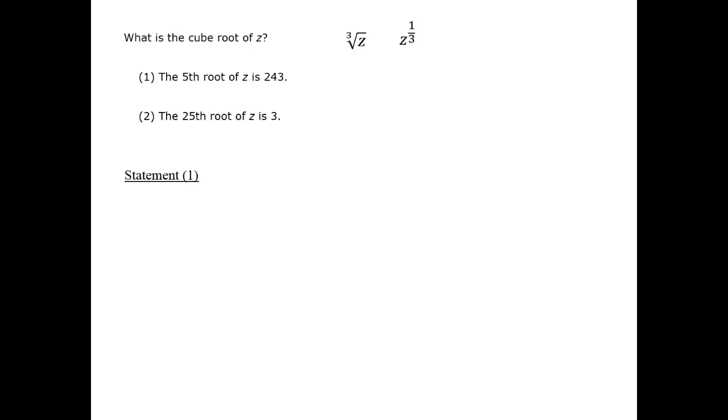Data statement 1 tells us about the 5th root of z. In algebraic terms, that's the same as the following equation. This bears some similarity to what we're interested in, but it's different. We have z to the 1/5th power. We care about z to the 1/3rd power.